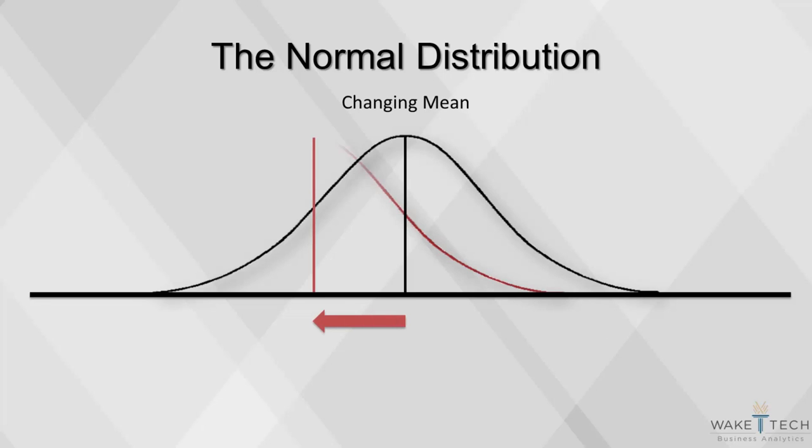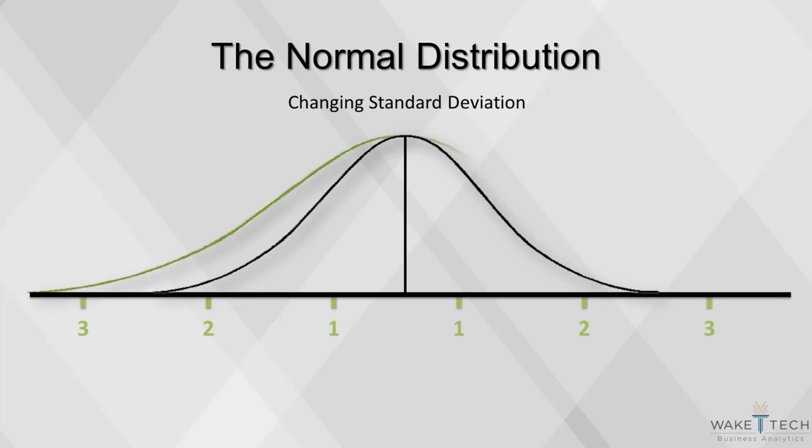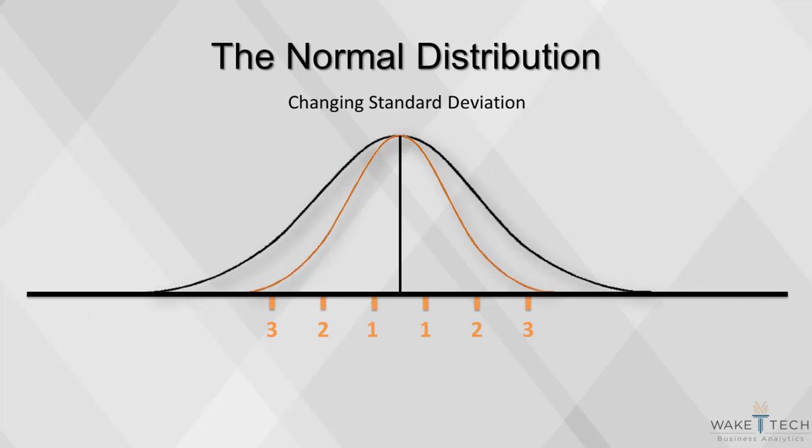By changing the mean, the normal curve shifts to the left or right. By changing how spread out the standard deviations are, the curve also changes. Standard deviations can be spread out wider or closer together.